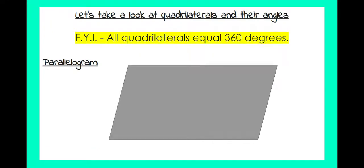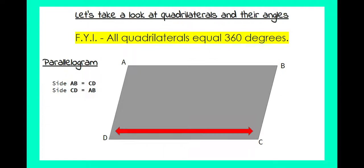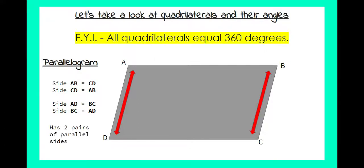Let's take a look at some quadrilaterals and their angles. Keep in mind all quadrilaterals equal 360 degrees. First we have a parallelogram with angles A, B, C, and D. Side AB is parallel and equal to side CD, and side CD in reverse is equal to AB. Side AD is equal and parallel to BC, and BC is equal to AD. A parallelogram has two pairs of parallel sides.